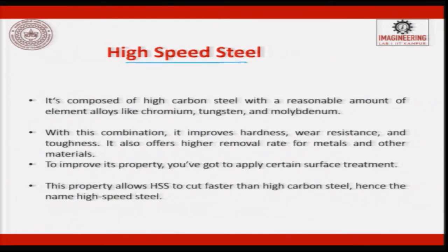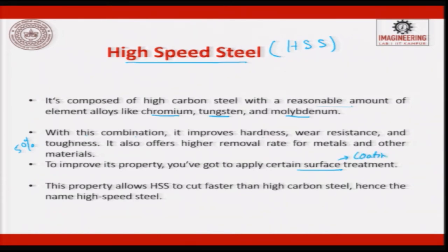When we talk about high speed steel, the high speed name came from ancient times. HSS is composed of high carbon steel with elements like chromium, tungsten and molybdenum - they give the hardness - and cobalt, which gives toughness. With this combination it improves hardness, wear resistance and toughness. It also offers high material removal rate because it should be 50 percent harder than the workpiece. Surface treatments like coatings of HSS are also applied today. This property allows HSS to cut faster than high carbon steel, hence the name high speed steel.